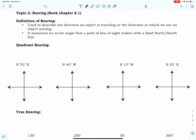So, our bearing is used to describe the direction an object is traveling or where we're seeing an object moving. It measures an acute angle that a path of line of sight makes with a fixed north line.